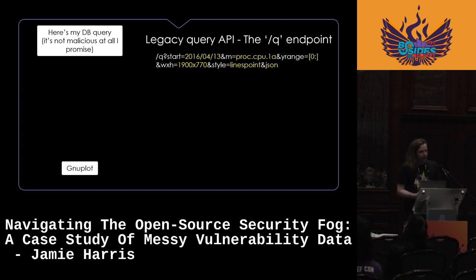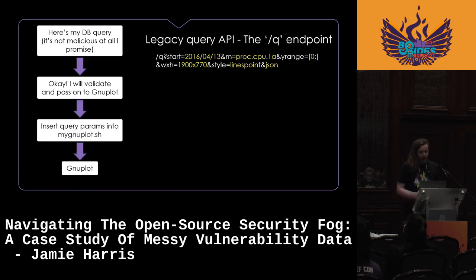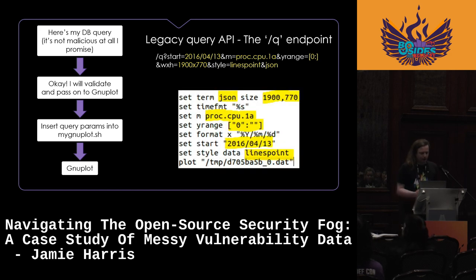Eventually this data is passed to GNUplot, which creates the plot, and then the plot of the data is returned back to the user. What OpenTSDB does in between is it says: I'll validate that data and then pass it on to GNUplot. The exact way it passes data is by inserting the query parameters that the user provided directly into a shell script. So that example endpoint query with the query parameters — when sent to OpenTSDB, it creates a shell script with those parameters directly inserted after validation, and then that runs the GNUplot commands to create the plot.